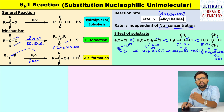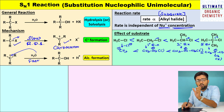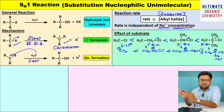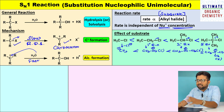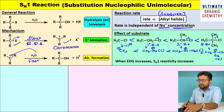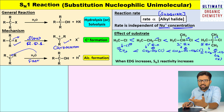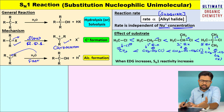The methyl cation is the least stable, meaning it will not form easily. If the first step does not form easily, the second step will obviously not proceed. So the least reactive will be methyl halide and the most reactive will be tertiary alkyl halide. This effect of substrate can be summarized as: when an electron donating group is attached to a carbocation, SN1 reactivity will increase.